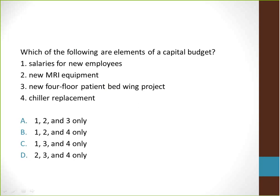Which of the following are elements of a capital budget? One, salaries for new employees; two, new MRI equipment; three, new four-floor patient bed wing project; or four, chiller replacement. They are looking for three out of four correct answers. Answer D is the correct response — answers two, three, and four are all true. Answer one is false because salaries are typically part of an operations budget.